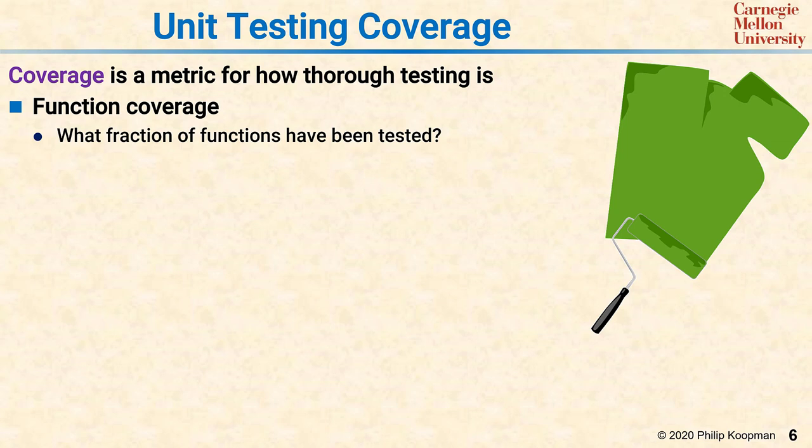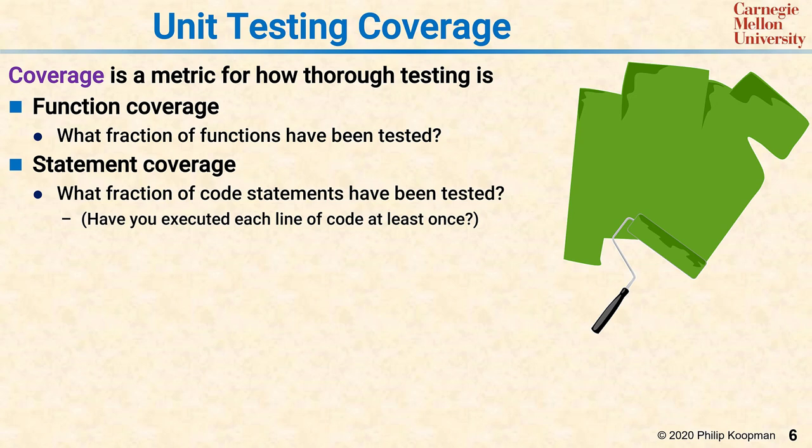Once you've gotten to the point where most or all of the functions have been tested at least a little, a finer-grained notion of coverage is statement coverage — what fraction of the code statements have been tested? Did you actually execute every line of code at least once? A typical metric might be that you've tested 95% of the lines of code. Well, 95% sounds good, but that means 5% of the code has never been executed at all, and depending on your system, that could be a problem.